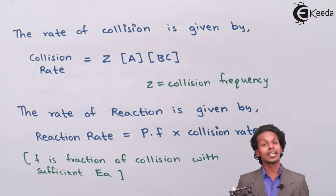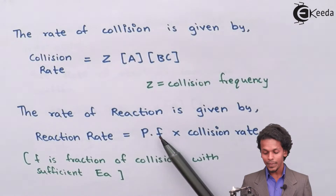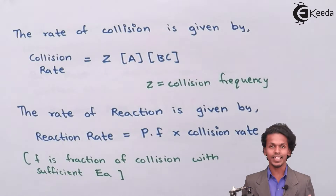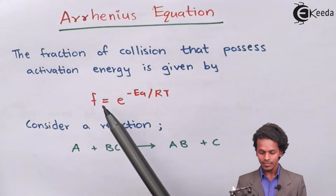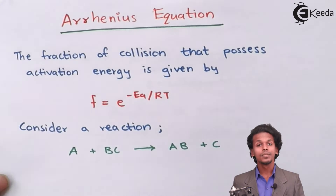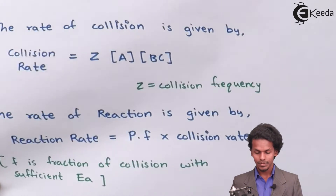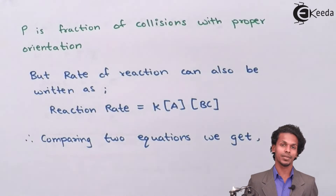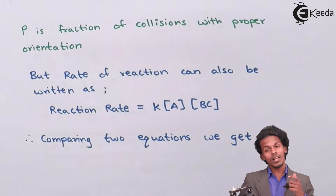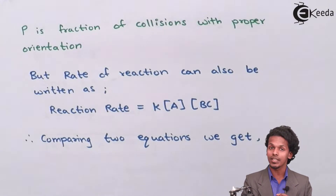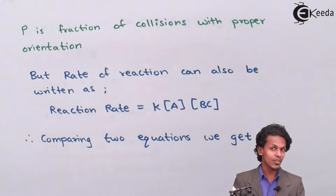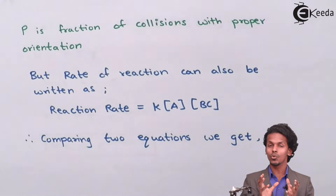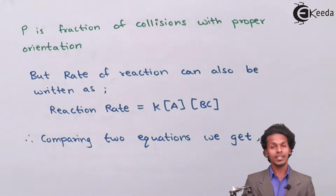The rate of the reaction is given by the formula: Reaction rate equals P into F into collision rate. Here F is the fraction of collisions with sufficient activation energy Ea, and P is the fraction of collisions with proper orientation. So there will be a fraction of molecules that collide at a particular energy of activation and with proper orientation between the two colliding reactants, A and BC.